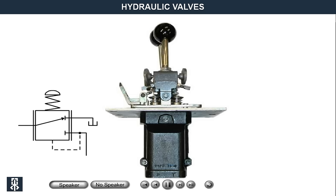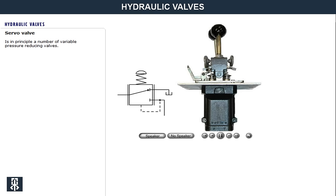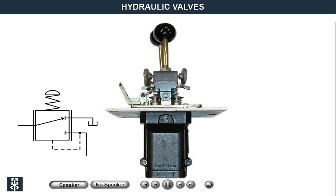A servo valve is in principle a number of variable pressure reducing valves. This means the valve can reduce the incoming servo pressure to a lower output control pressure. With this pressure, directional valves can be controlled variably so that the movement speed of users can be varied.